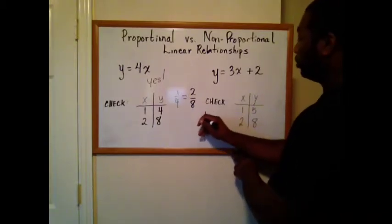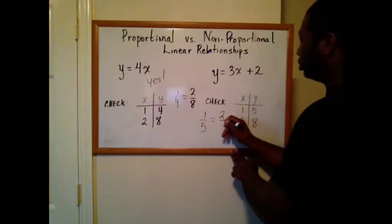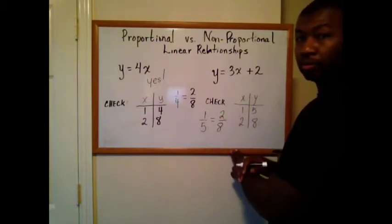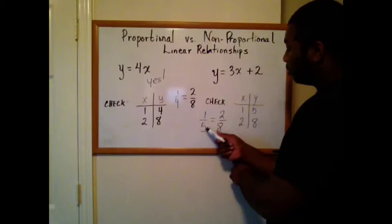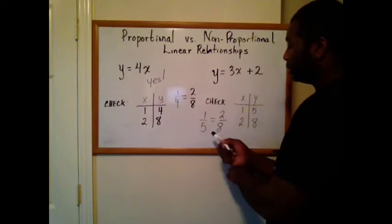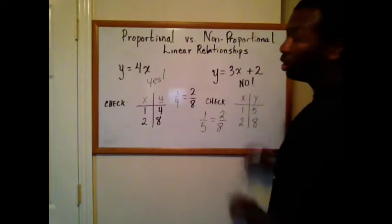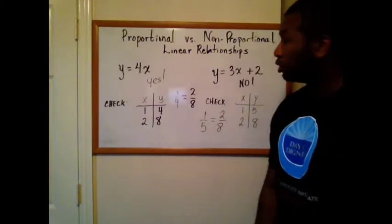I'm going to write them as fractions. See if they actually are equivalent. Is one over five equal to two over eight? When I look at this, butterfly method to check it. Five times two is ten. Eight times one is eight. So are they proportional? No, they're not proportional.